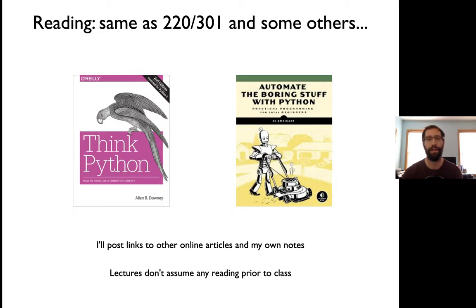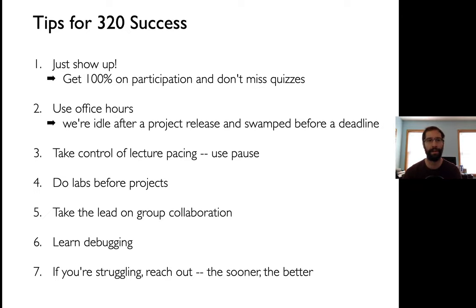Readings include some of the similar texts from 220 and 301, and I'm also going to have readings of my own. You don't have to do readings before watching the lectures — you can generally do them after. Some tips for success: just show up, even virtually. It should be very easy to get 100 on participation — last fall the average rate was below 80 percent. Show up to your meetings, do the online discussions, fill out the surveys I ask for. And don't miss quizzes — they're multiple choice and open book, so at least guess. Don't leave points on the table.